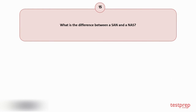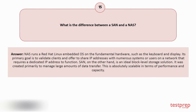Question number 15: What is the difference between a SAN and a NAS? NAS runs a Red Hat Linux embedded OS on the fundamental hardware, such as the keyboard and display. Its primary goal is to validate clients and offer to share IP addresses with numerous systems or users on a network that requires a dedicated IP address to function. SAN, on the other hand, is an ideal block level storage solution. It was created primarily to manage large amounts of data transfer. This is absolutely scalable in terms of performance and capacity.